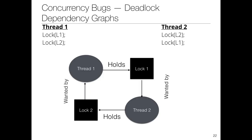This deadlock can be represented as a resource graph. Thread T1 holds lock L1 but wants lock L2; thread T2 holds lock L2 but wants lock L1. You can see a circular dependency, which is a necessary condition for deadlock to occur.